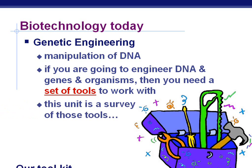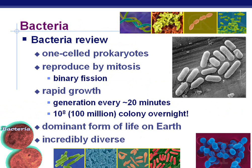First we need to review bacteria, because that's really where our work begins. They're one-celled prokaryotes. They reproduce by the process of mitosis, but really we call it binary fission with bacteria. They grow very quickly — in fact, they can have a new generation approximately every 20 minutes. Just overnight, they're going to have 100 million in their colony. They are the dominant form of life on Earth, and of course are incredibly diverse.